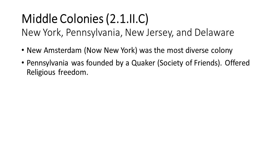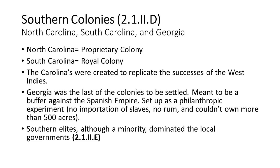The southern colonies tried to recreate the economic successes of the West Indies — the Caribbean. The British had islands like Jamaica, Antigua, and Barbados, where they mainly grew sugar and made lots of money. They imported many slaves, who faced very hard work and high mortality, and were replaced by the thousands. The colonists wanted to replicate that model in the Carolinas, and did so to a certain extent.